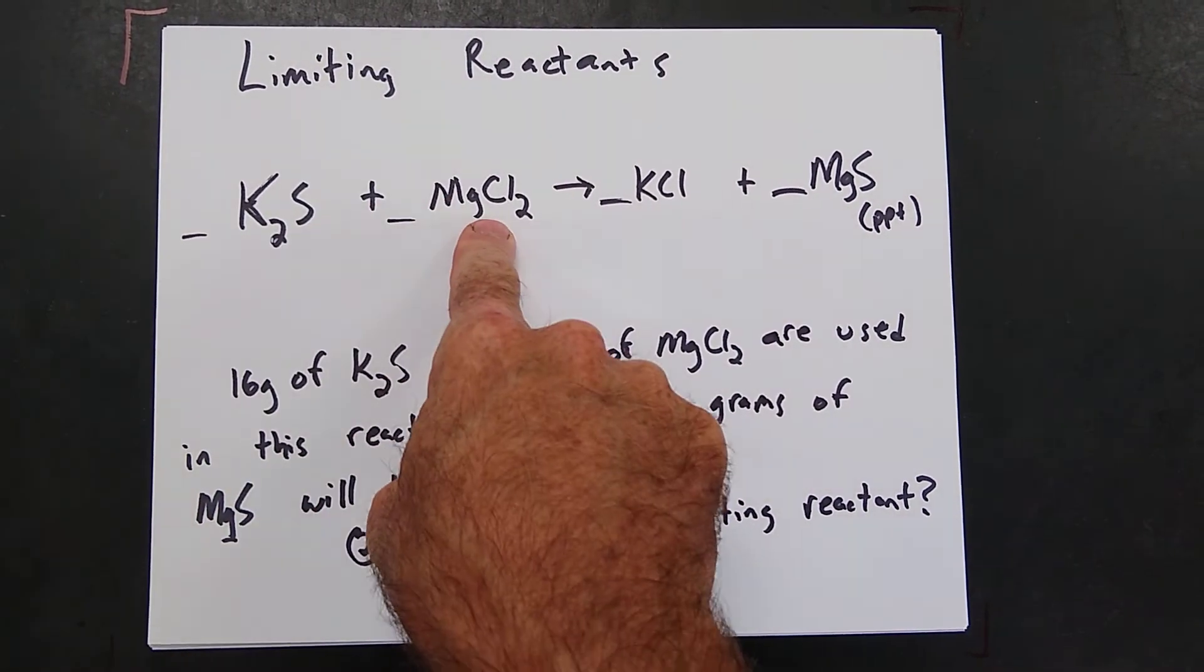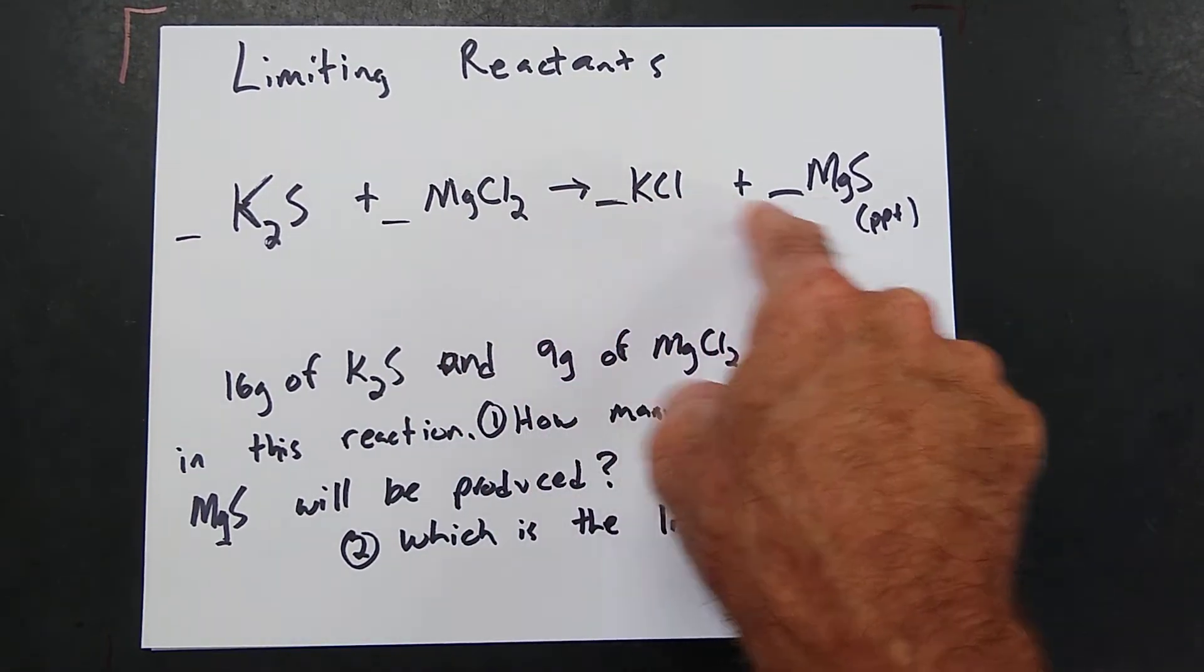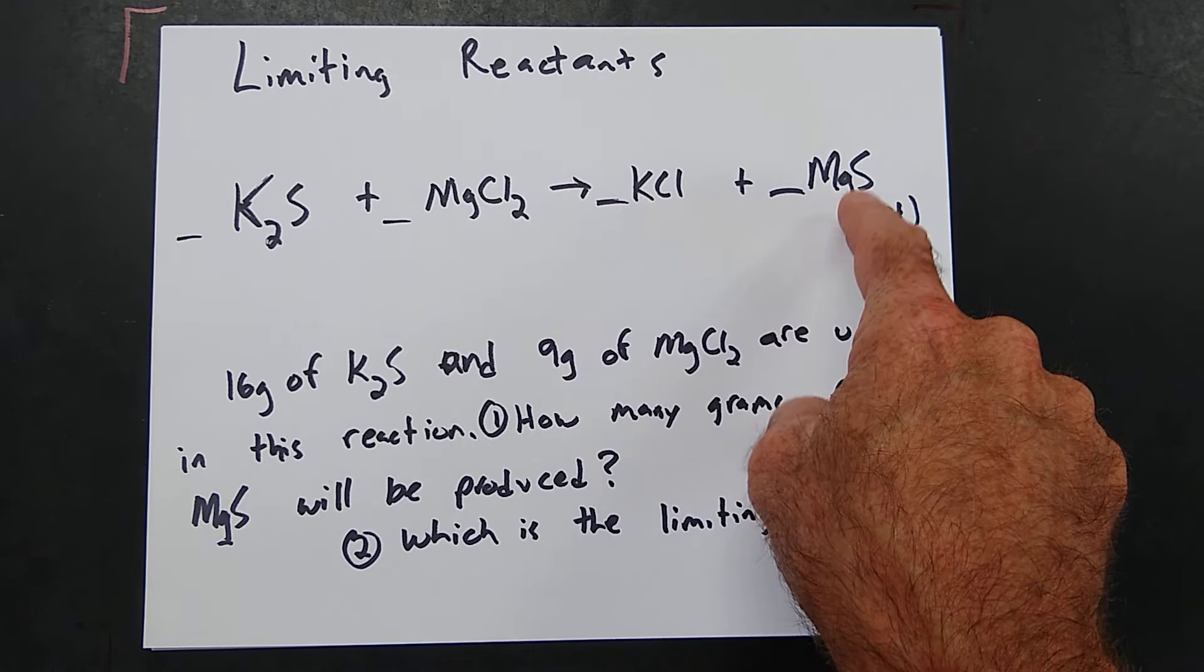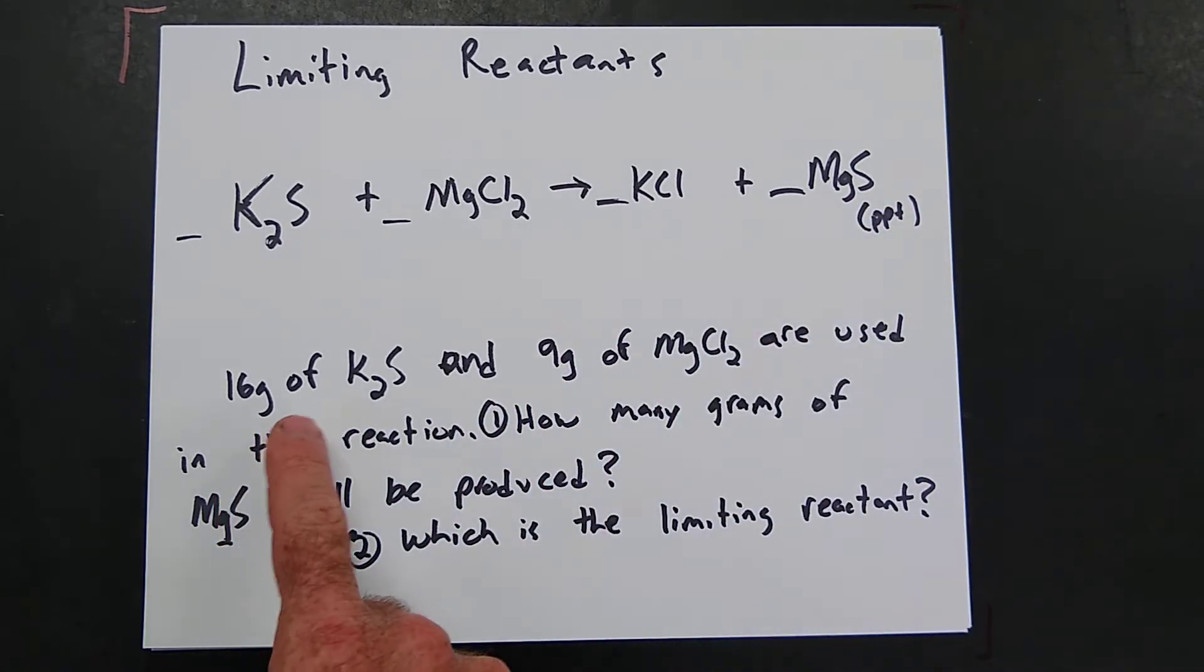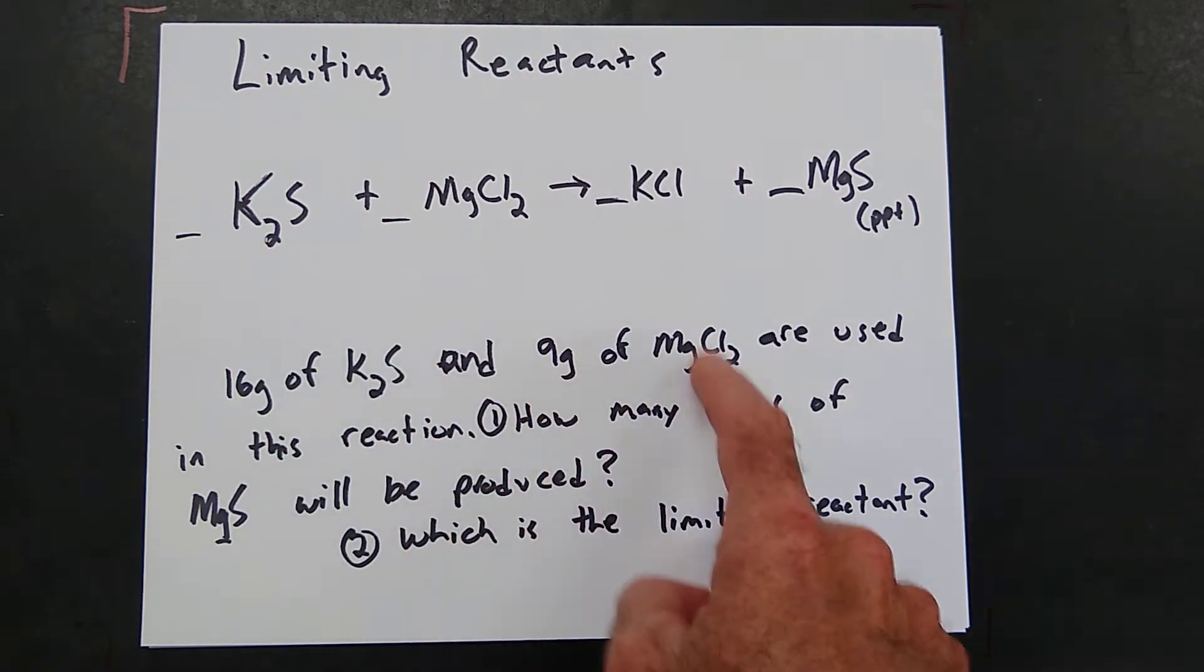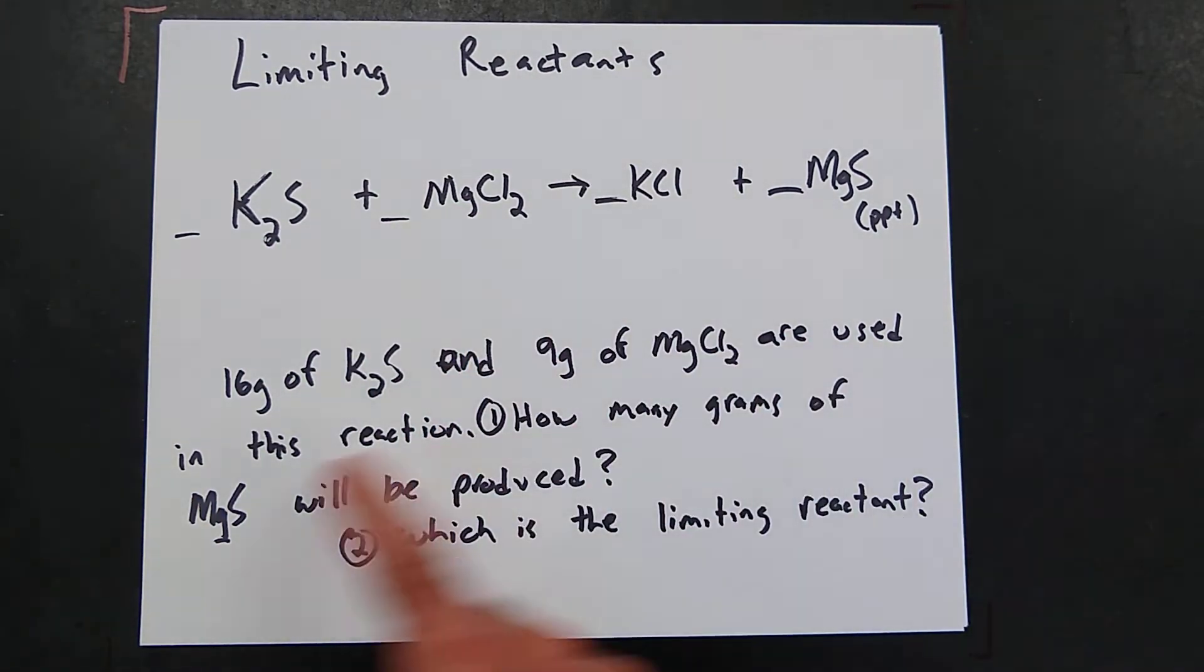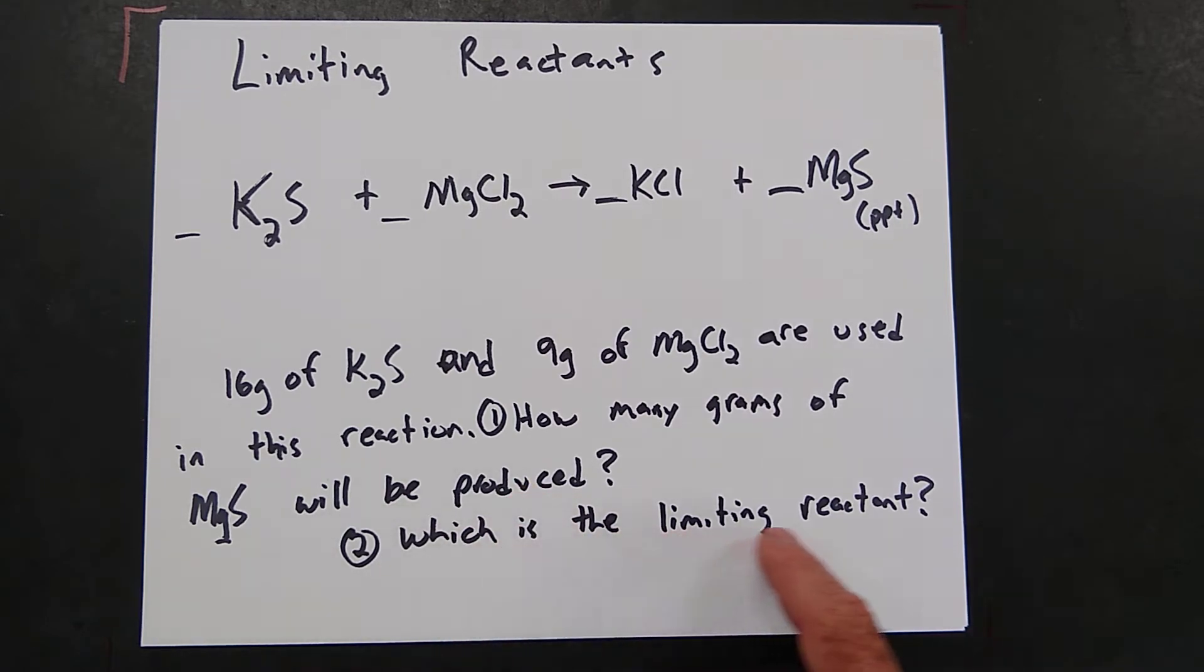Potassium sulfide and magnesium chloride are mixed to produce potassium chloride and magnesium sulfide. This is a precipitate. 16 grams of potassium sulfide and 9 grams of magnesium chloride are used in this reaction.